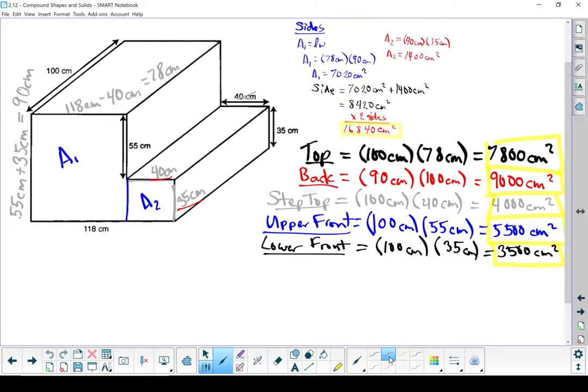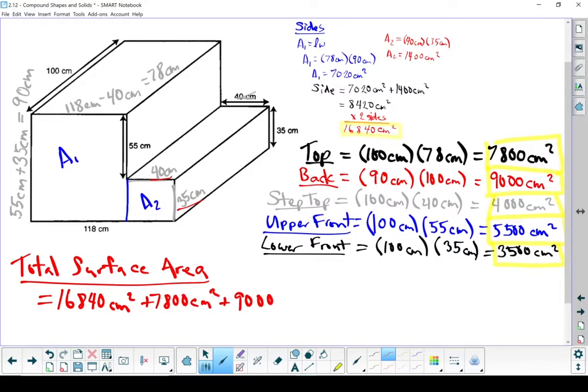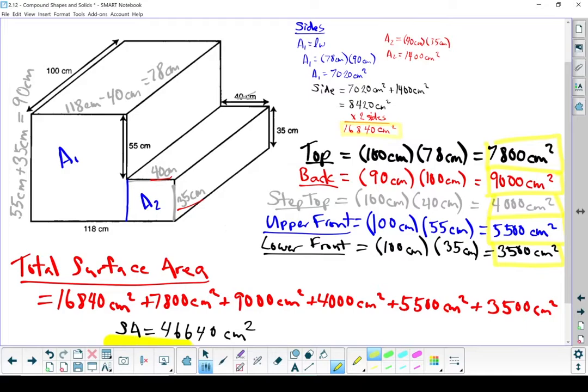The last thing we need to do here now is find that total area that needs to be painted. Keep in mind, you don't have to paint the bottom, so we're not doing that surface. But to find that total area that needs to be painted, we're going to take all these numbers, all of these surface areas of the faces, the ones in yellow boxes, and we're going to add them together. If I add all those numbers up, my total surface area ends up being 46,640 square centimeters. And that is the total surface area of this that needs to be painted.